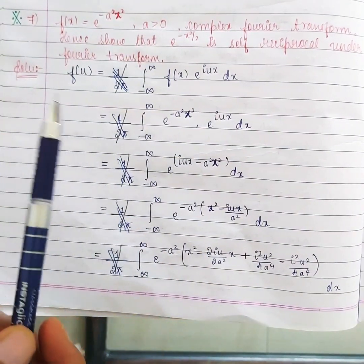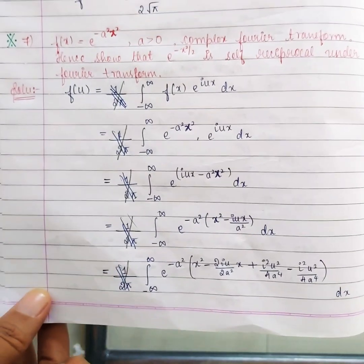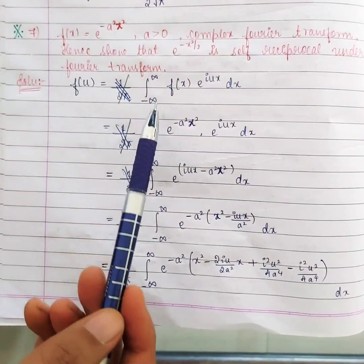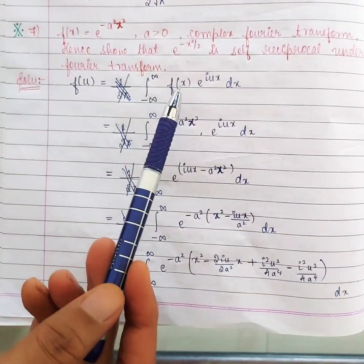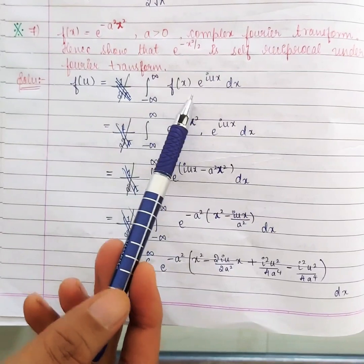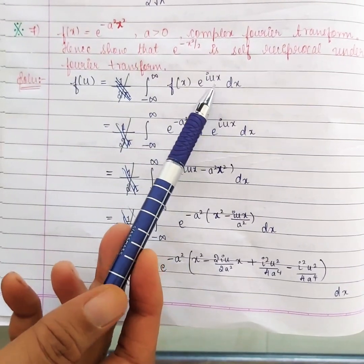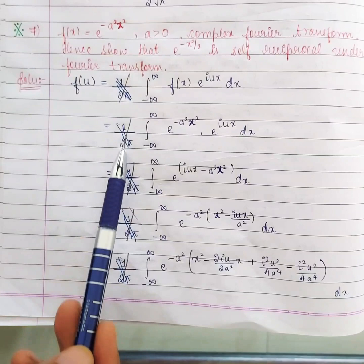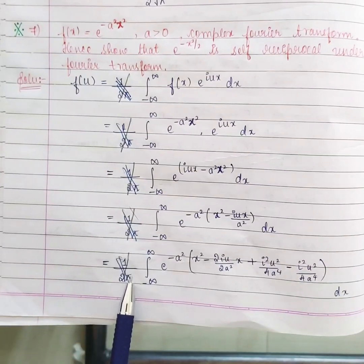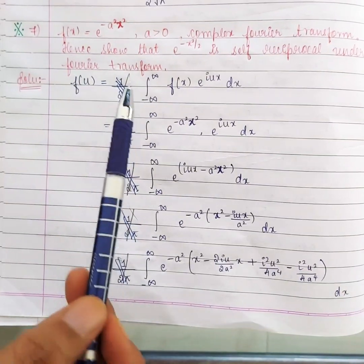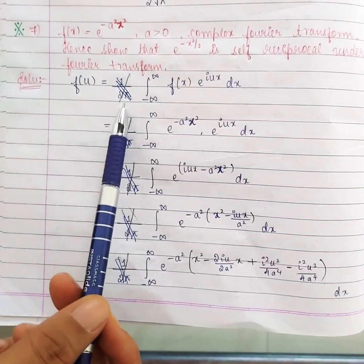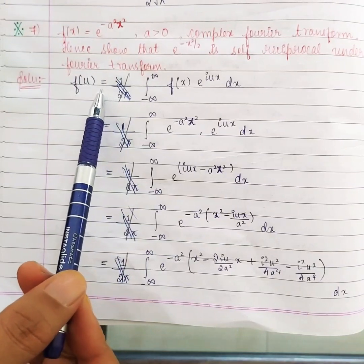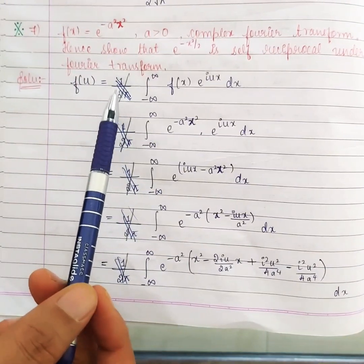The Fourier transform formula is: F(u) = integral from minus infinity to infinity of f(x) e^(iux) dx. A common mistake is to write 1/(2π) — remember, 1/(2π) comes only in the inverse Fourier transform. So please be careful and clear with the formula.